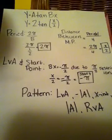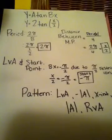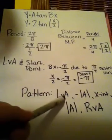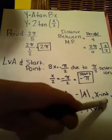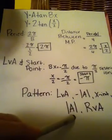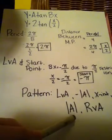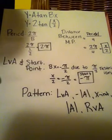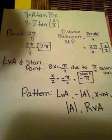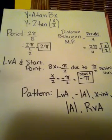Along with this, tangent graphs have a pattern, which is a left vertical asymptote, to our negative absolute value of a, to our x-intercept, to our positive absolute value of a, and our right vertical asymptote. Now, I'm going to go ahead and graph these points.